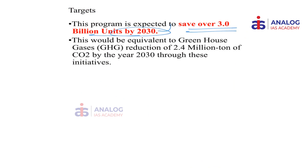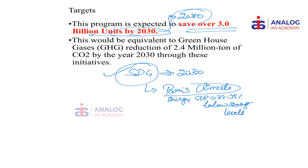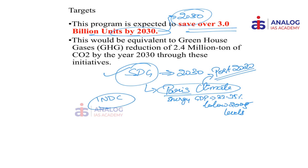The target of this scheme is to save over 3 billion units by 2030. The significance of 2030 is that it is the target year for the Sustainable Development Goals, which are aligned with the Paris Climate Agreement. In the Paris Climate Agreement, India committed to achieve three targets called Intended Nationally Determined Contributions — a public pledge from a country on how it plans to play its part in the post-2020 regime. India has already started implementing all its commitments.